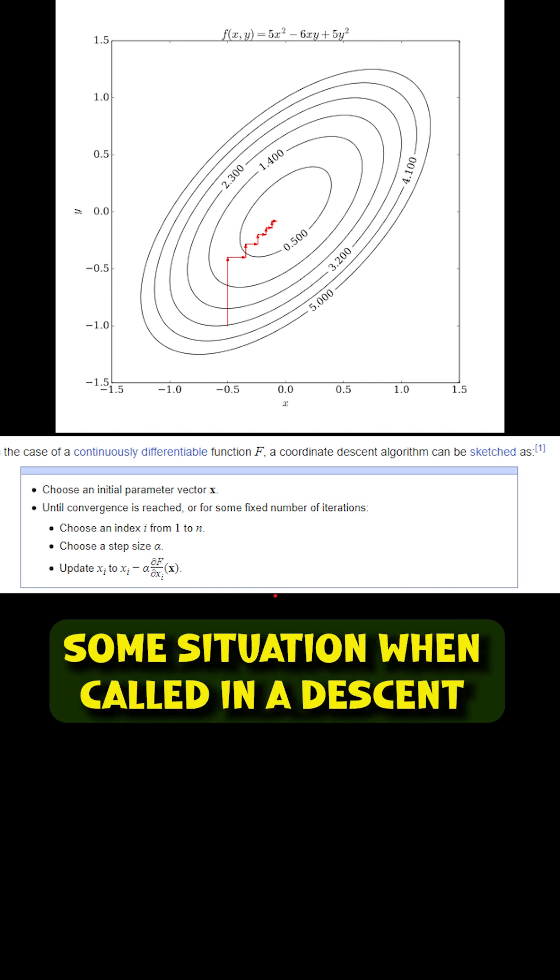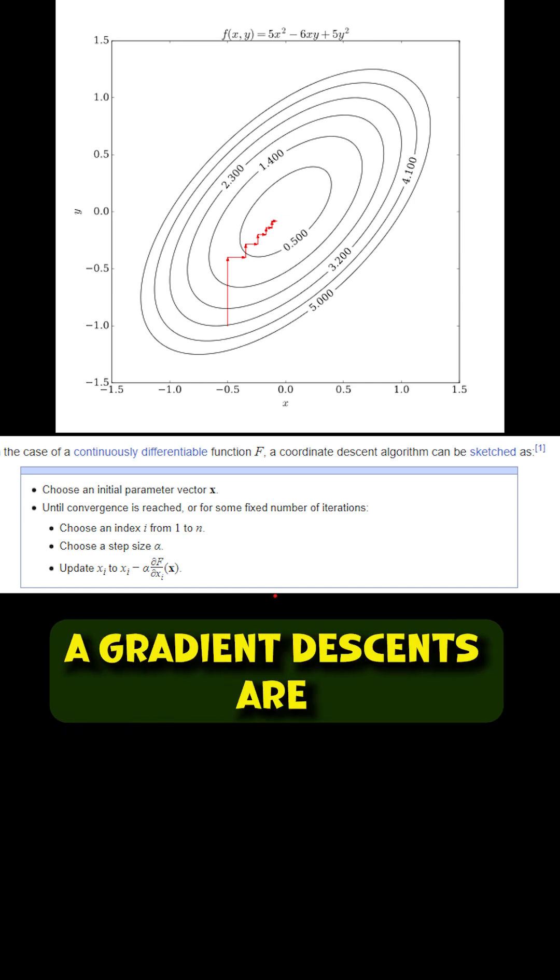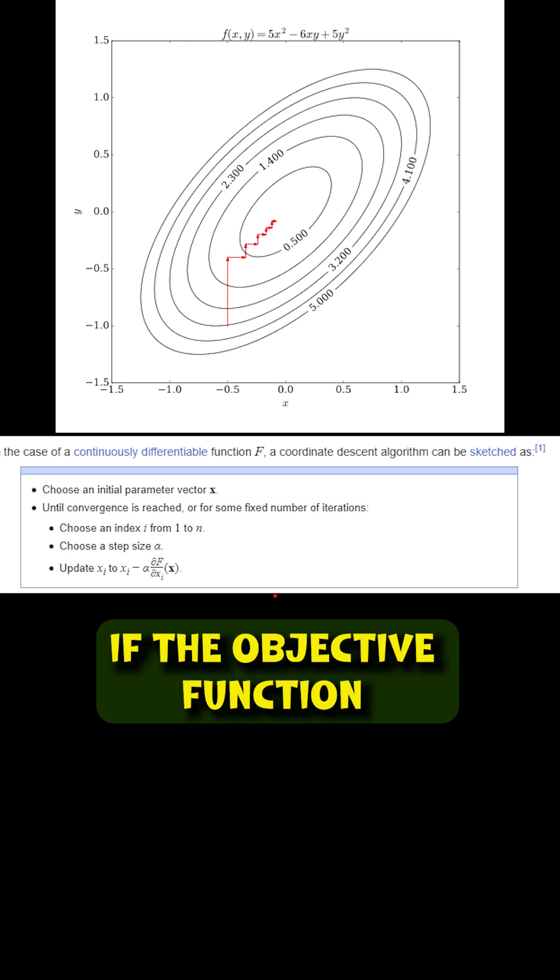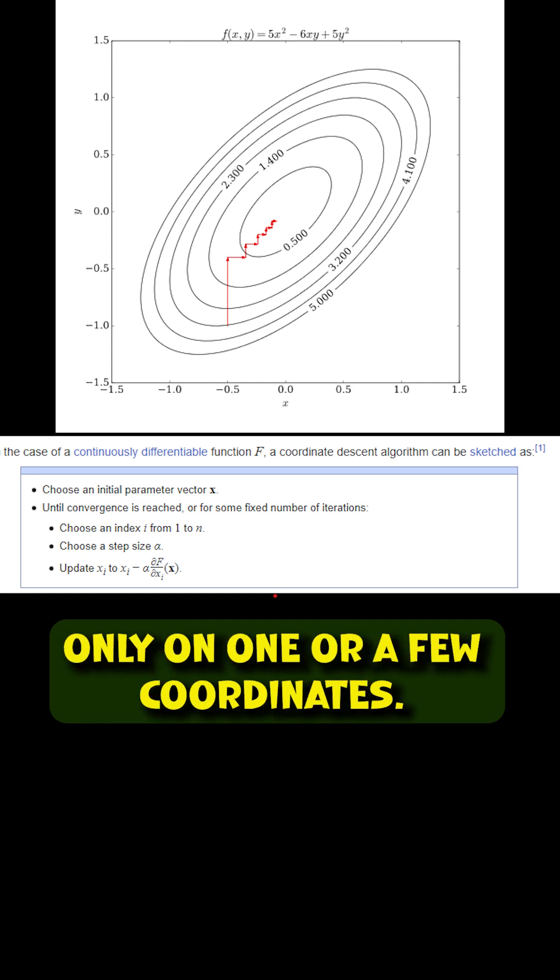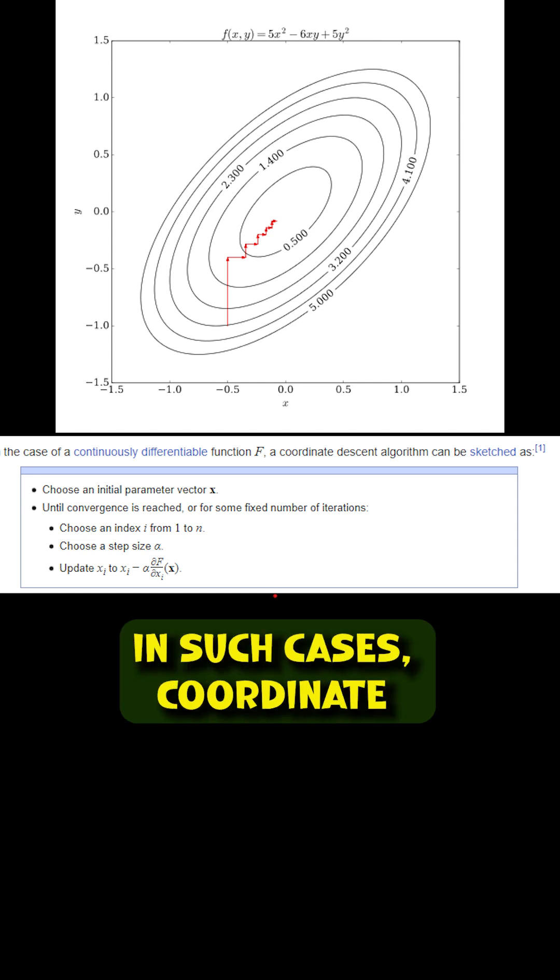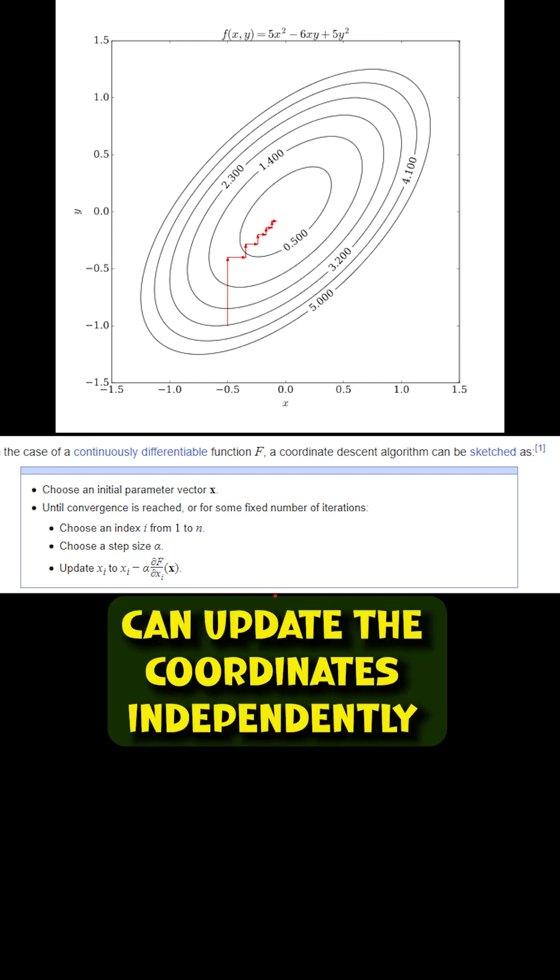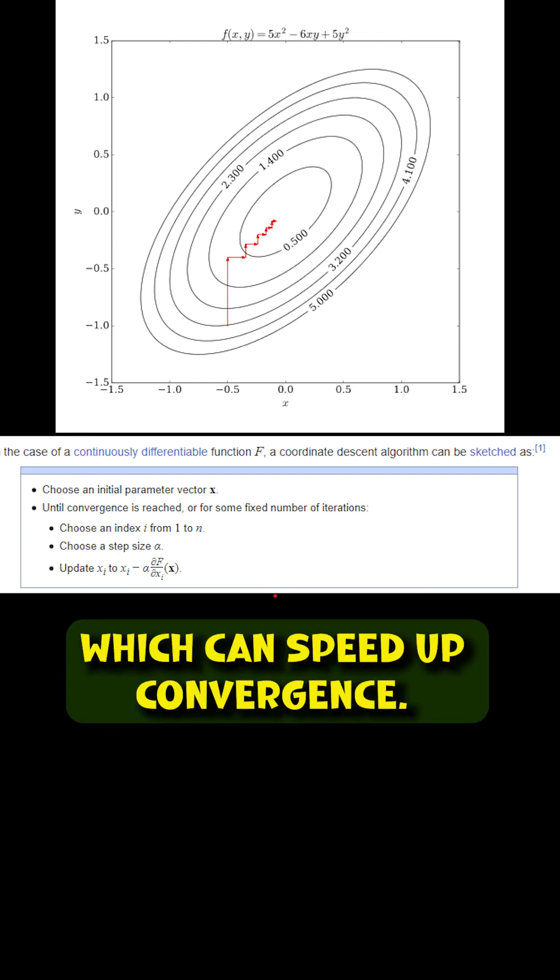Some situations when coordinate descent might be preferred over gradient descent are if the objective function can be expressed as a sum of separate functions where each function depends only on one or a few coordinates. In such cases, coordinate descent can update the coordinates independently and in parallel, which can speed up convergence.